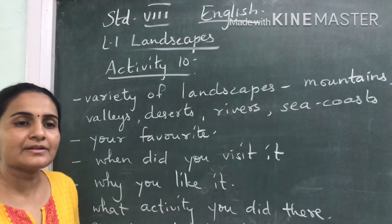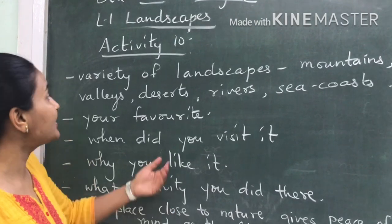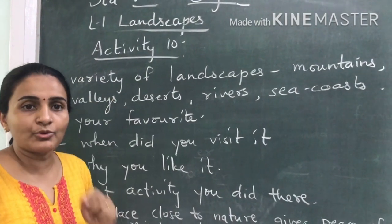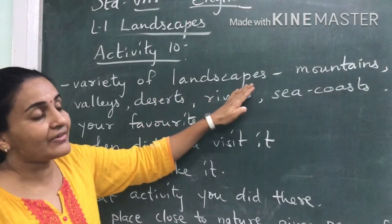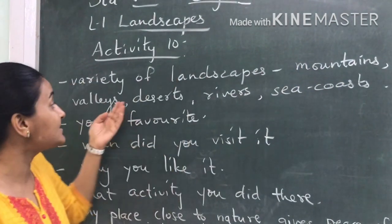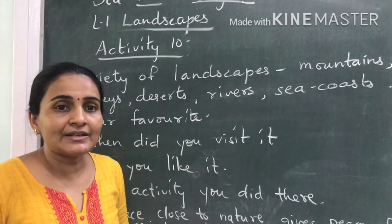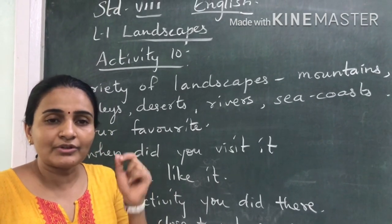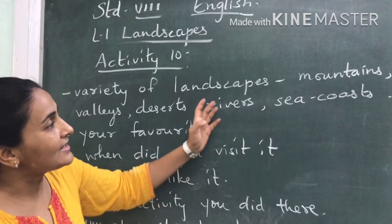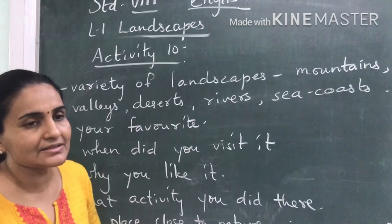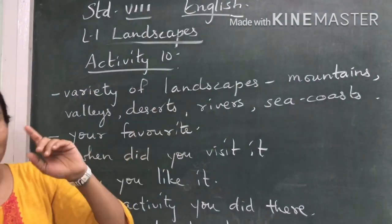Activity 10 of Lesson 1 is on page 8 of your textbook and deals with writing a short paragraph about your favorite landscape. In India there are a variety of landscapes — mountains, deserts, valleys, rivers, and coastlines at different places. Your purpose is to write which one is your favorite. Start with a general sentence: 'India has a variety of landscapes like mountains, valleys, deserts, seacoast, rivers, and riverbanks,' then select any one as your favorite.